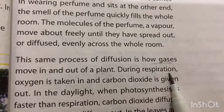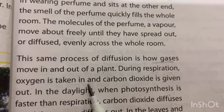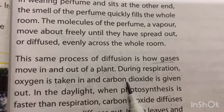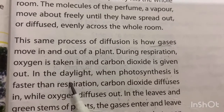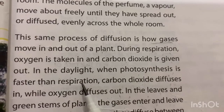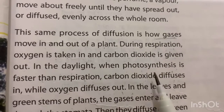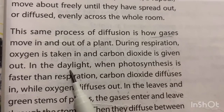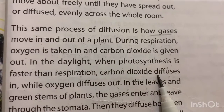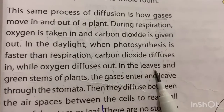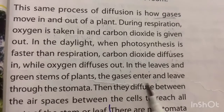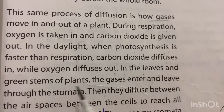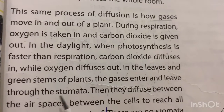During respiration, oxygen is taken in and carbon dioxide is given out. In the daylight, when photosynthesis is faster than respiration, carbon dioxide diffuses in while oxygen diffuses out. In the leaves and the green stem of the plants, gases enter and leave through the stomata.